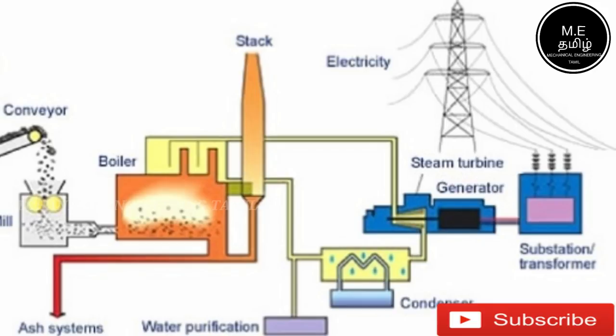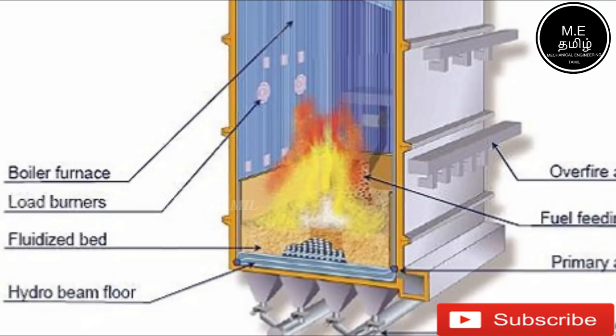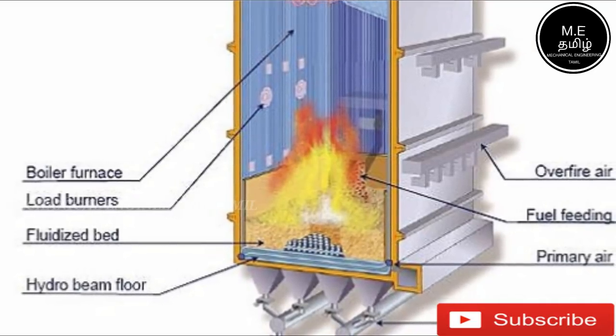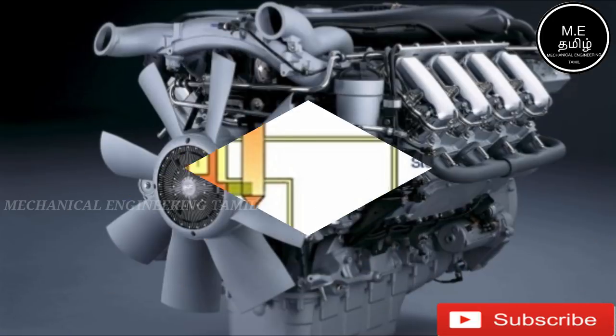You heat the boiler to generate steam from the water tubes. That steam drives a turbine, and the turbine drives a generator to produce electricity. This is the external combustion engine process in a thermal power plant.